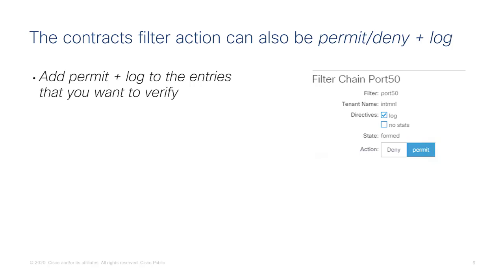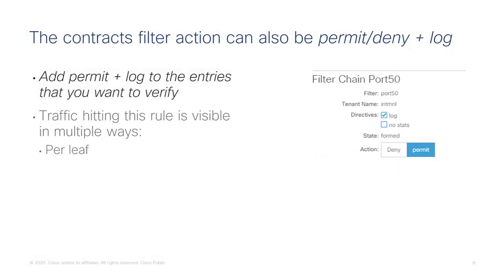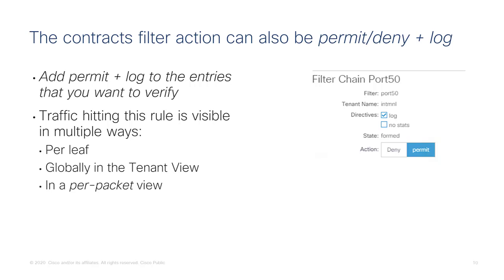Logging is helpful for troubleshooting. Next to the filter you define the directive log, and traffic hitting a rule with log enabled can be seen by going directly to the leaf where the traffic is traversing, or you can see an aggregated view under the tenant view. In the tenant view you can see traffic from any leaf categorized in two views: a per-packet view showing packet-by-packet hits, or a per-flow view where traffic is organized by flow with a hit count measuring how many logged packets belong to a given flow.